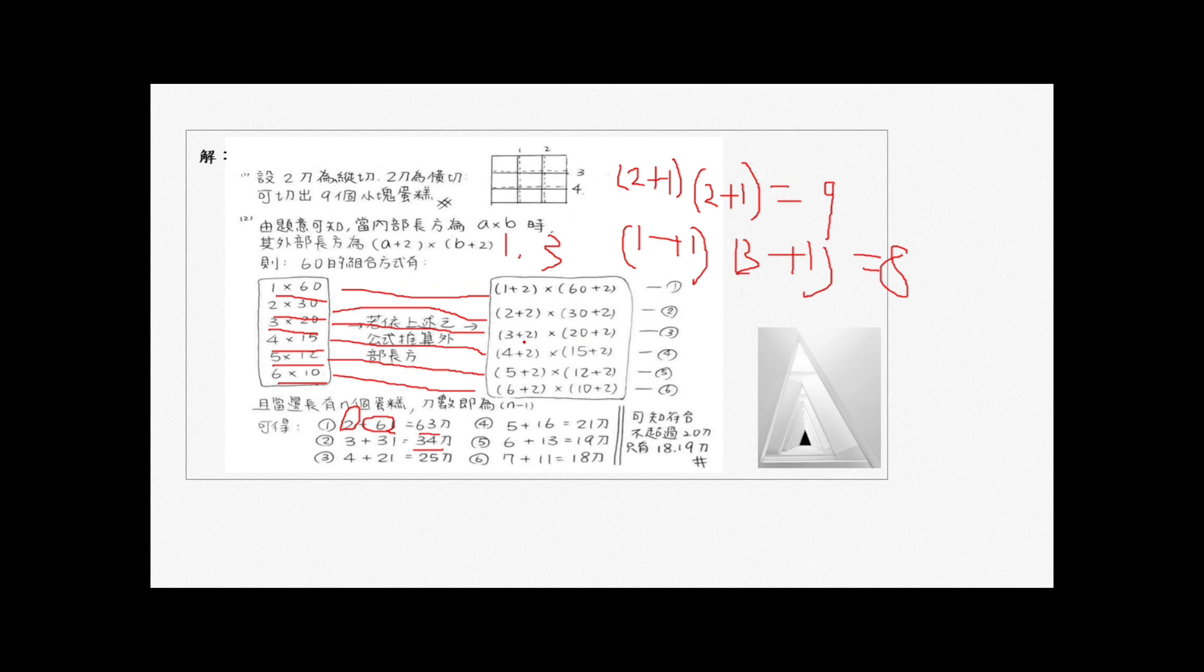第二个外的宽是长32,所以各减一之后变到三跟31,所以加起来34刀。第三种三加二五、20加二22,所以各减一是刀数,所以剩下四加21等于25刀。第四种四加二六、15加二17,所以刀数各减一是五加16,所以知道21刀。